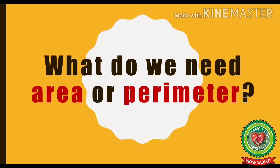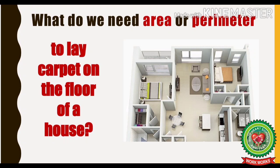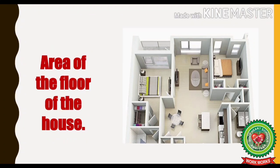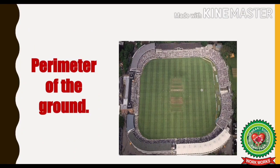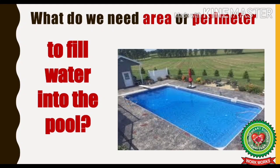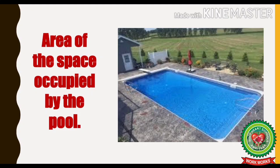Now let us discuss some questions so that this concept is clear to you. What do we need — area or perimeter — to lay carpet on the floor of a house? Yes, we must know the area of the floor. What do we need to fence a cricket ground? Yes, we need the perimeter of the ground. What do we need to fill water into a pool? We need the area of the space occupied by the pool.